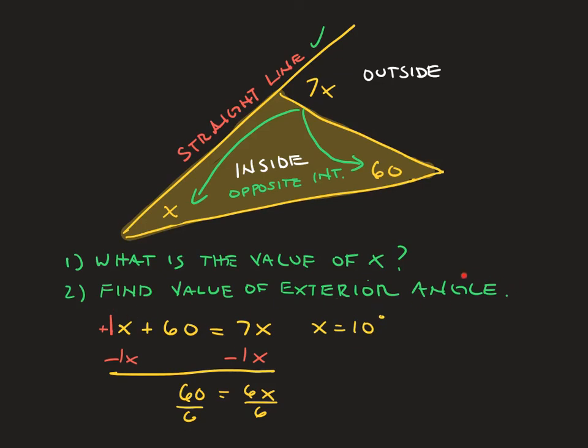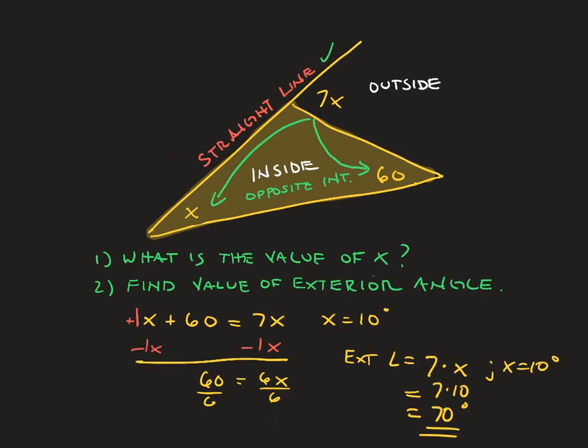Don't forget to do all of the problem though. It also asks us to find the value of the exterior angle. An exterior angle is equal to 7x, and x is equal to 10 degrees. So therefore it's going to be equal to 7 times 10 or 70 degrees. And that's all there is to it.